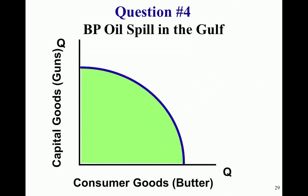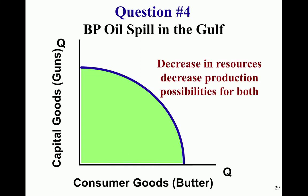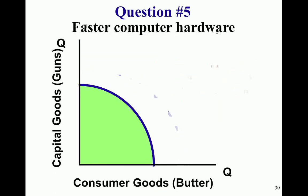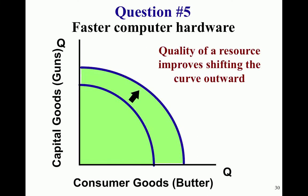Question four — the BP oil spill in the Gulf reduces the amount of fuel available, which decreases production possibilities for both goods, since fuel is needed to produce both capital goods and consumer goods, so the entire curve shifts in. Question five — faster computer hardware is invented. An improved quality of this resource means computers can be used in producing both consumer goods and capital goods, so the entire curve shifts out.